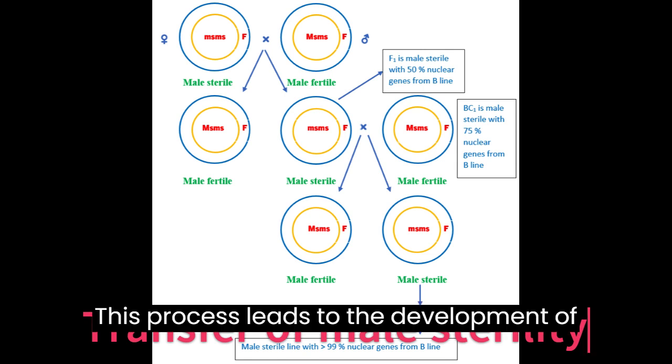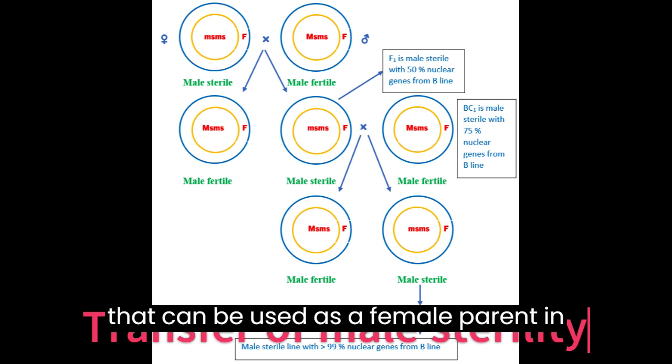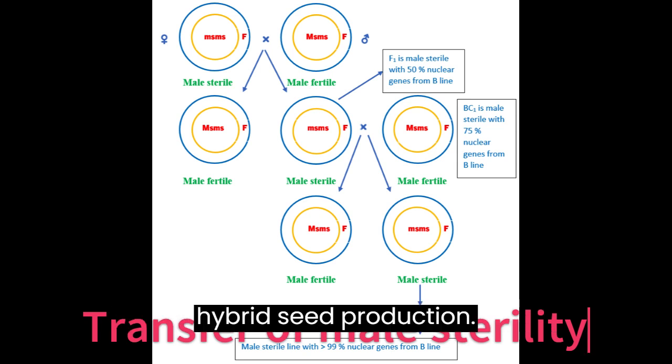This process leads to the development of a stable and genetically uniform plant that can be used as a female parent in hybrid seed production.